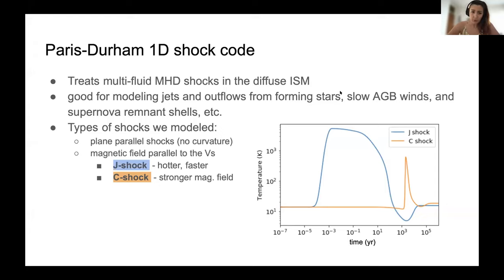This shock models plane parallel shocks, which means we have no curvature, and the magnetic field is parallel to the shock velocity. In these conditions, the two main types of shock that we can have are J-shock and C-shock, that are shown in this image here. You can see that the J-shock, the blue line here, reaches much higher temperatures, and the C-shock reaches lower temperature for the same energy.